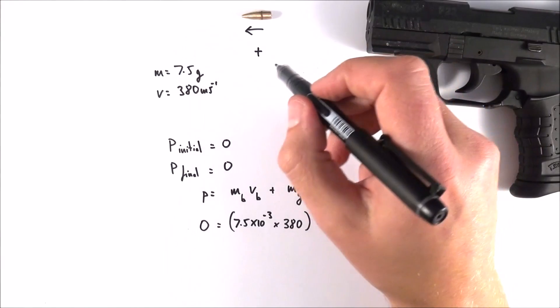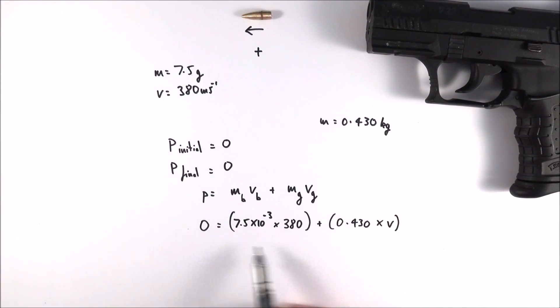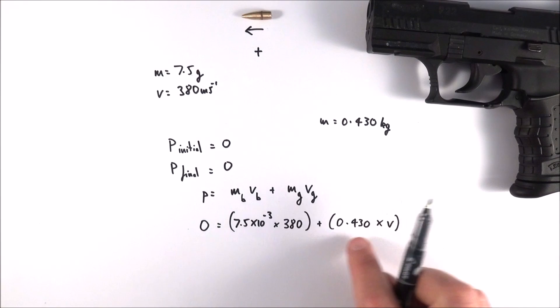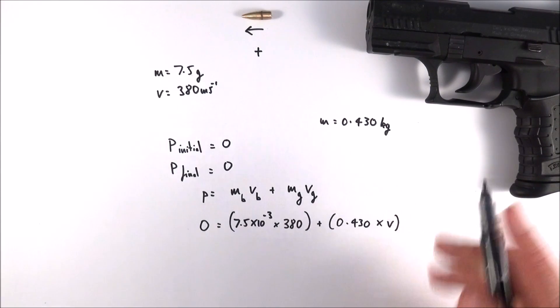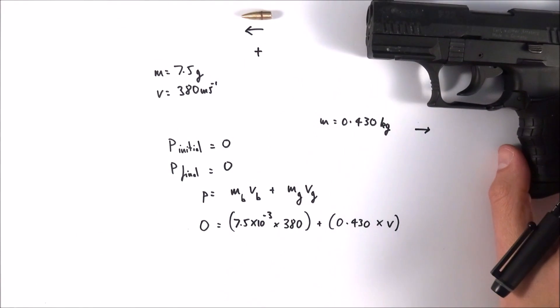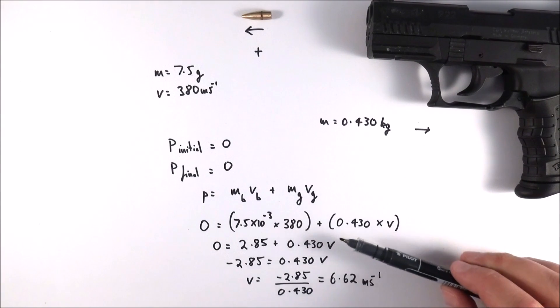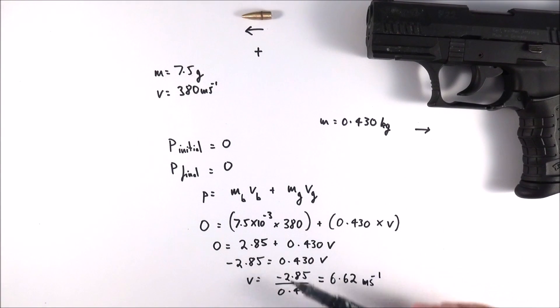Now if we've got the bullet moving off to the left hand side, let's take this direction, the direction to the left, as a positive direction, which means any direction to the right is going to be negative. So what we have now is all the data we need and we can then start to compute this, actually work out the velocity of how quickly that gun moves back. So I've put the data in, I've rearranged it, and I found that this thing actually moves off initially at 6.62 meters per second.